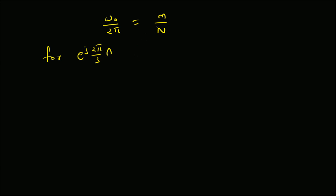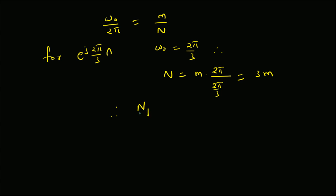For the first component e^(j·2π/3·n), this condition is satisfied with ω₀ = 2π/3. Therefore N = m·(2π/ω₀) = m·(2π / (2π/3)) = 3m. The minimum value occurs at m = 1, giving fundamental period N₁ = 3.